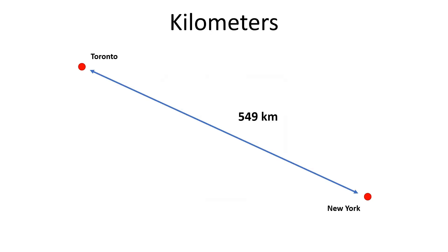What is the distance between New York and Toronto in meters? One kilometer is equal to 1,000 meters. In our example, the distance between New York and Toronto is 549 kilometers, so it is 549,000 meters.